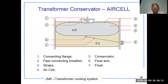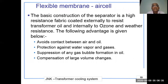The flexible membrane or air cell has a basic construction of high-resistance fabric coated externally to resist transformer oil and internally to resist ozone. Advantages include: avoiding contact between air and oil, protection against water vapor and gases, suppression of gas bubble formation in the oil, and compensation for large volume changes. Using the air cell, oil filtration is not required for up to five years, making it essentially maintenance-free, while ensuring the oil and internal paper insulation remain in good condition.